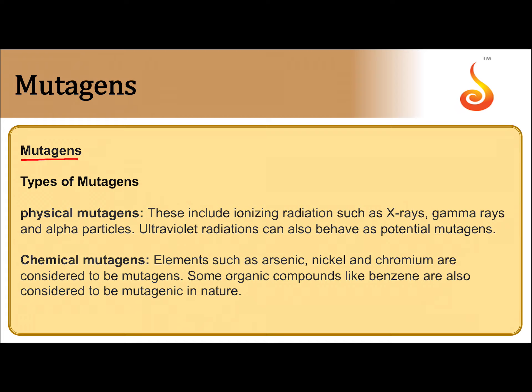The agents that cause mutation are called mutagens or mutation-causing agents. Mutagens are classified into three types: physical, chemical, and biological mutagenic agents. Examples of physical mutagenic agents include X-rays, gamma rays, alpha rays, and ultraviolet rays.